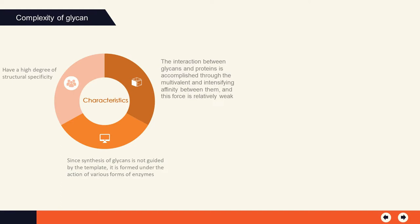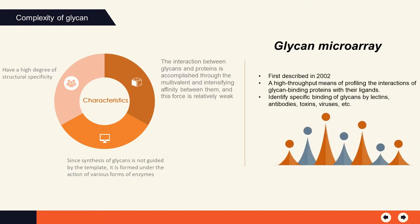Therefore, in order to carry out research on the structure and function of glycans, researchers have established a new research method: glycan microarray. Glycan microarrays, first described in 2002, provide a high-throughput means of profiling the interactions of glycan-binding proteins with their ligands. This method can be used to identify specific binding of glycans by lectins, antibodies, toxins, viruses, and so on.